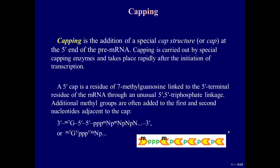Capping is the addition of a special cap structure at the 5' end of the pre-mRNA. Capping is carried out by special capping enzymes and takes place rapidly after the initiation of transcription. A 5' cap is a residue of 7-methylguanosine linked to the 5' terminal residue of the mRNA through an unusual 5' triphosphate linkage.